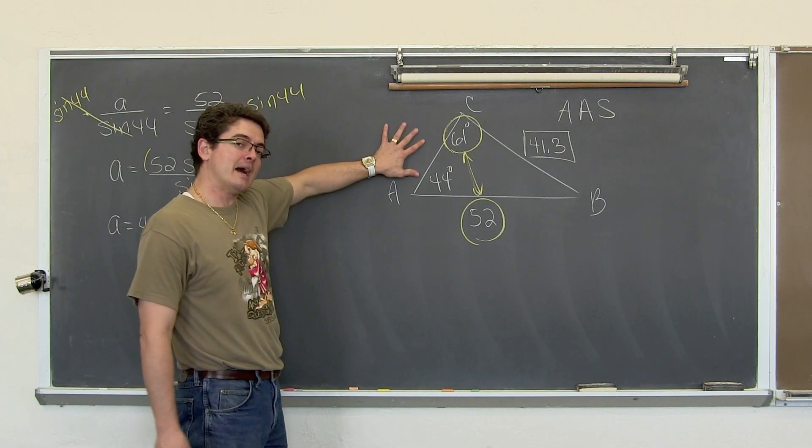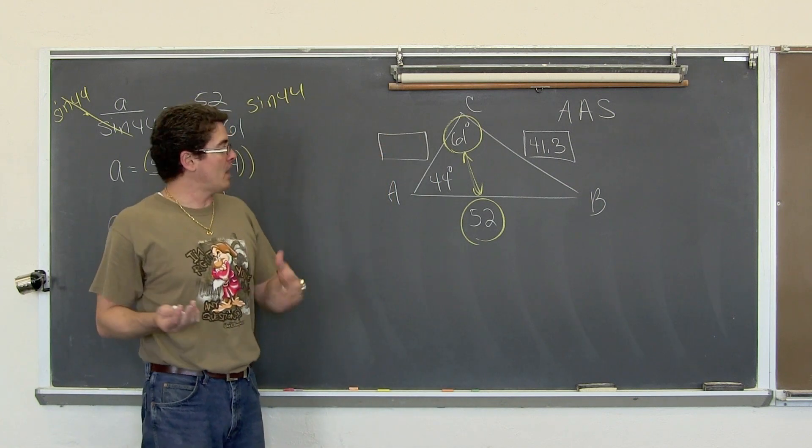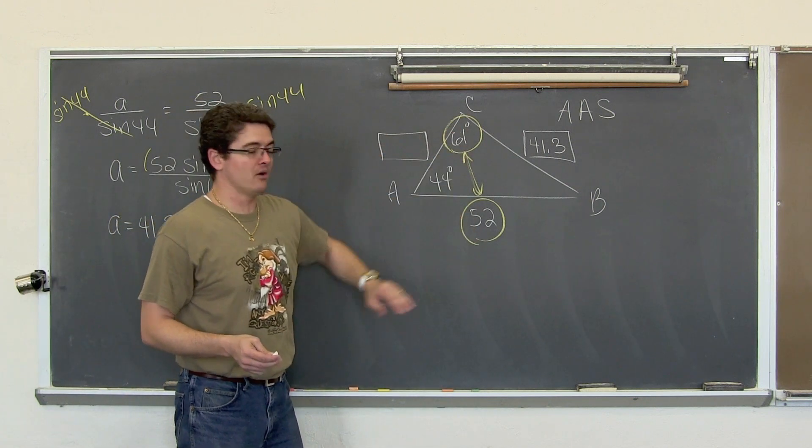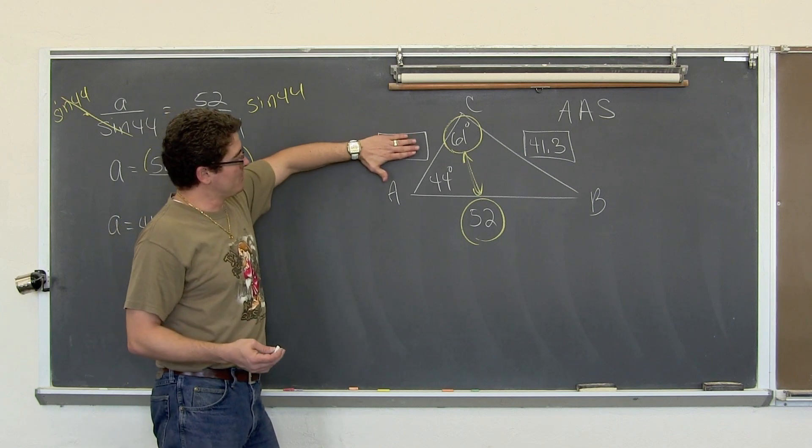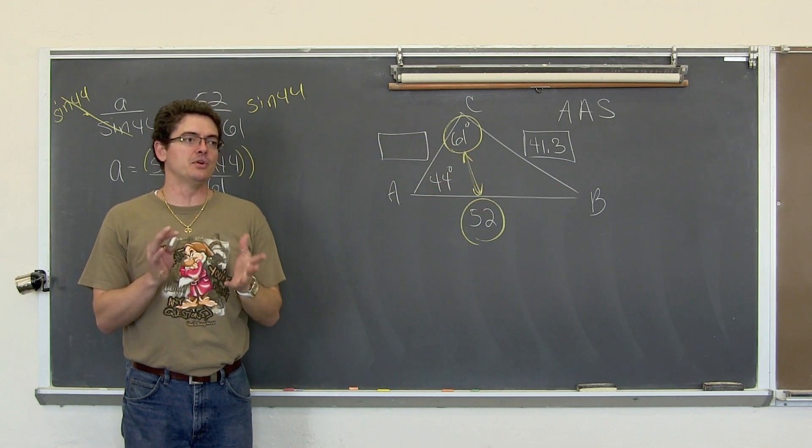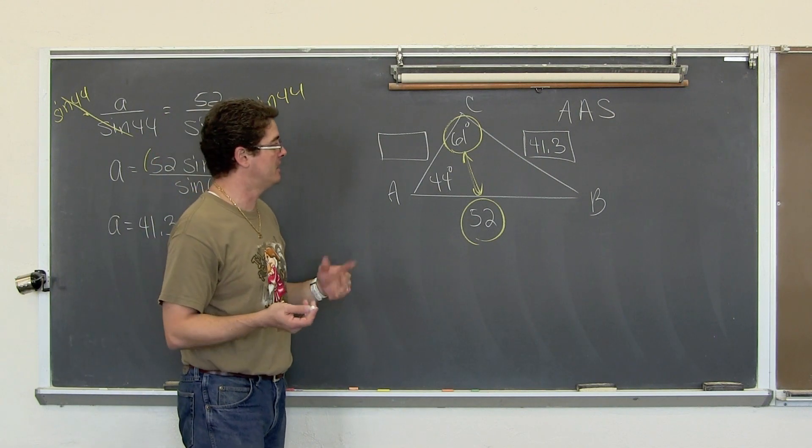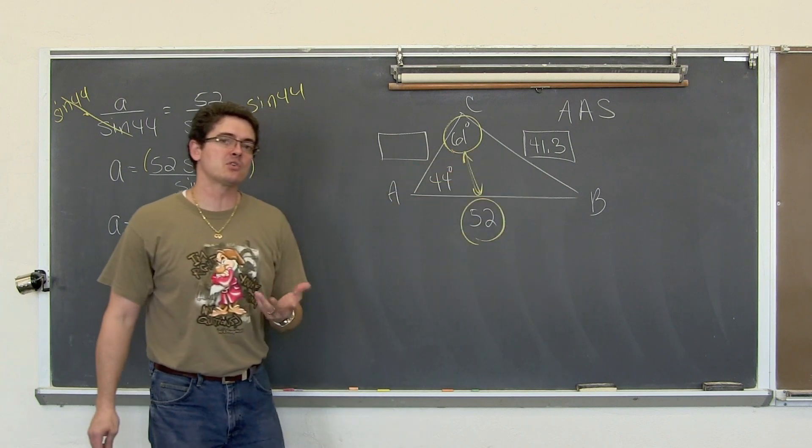Now, if you are in a science class, your teacher might be really enforcing significant digits. And they might not really like you putting a calculated value that appears to be more accurate than the measured values. So this kind of technically needs to be rounded off to 41. I don't really do that ever so it is 41.3. Now we want to find side b.